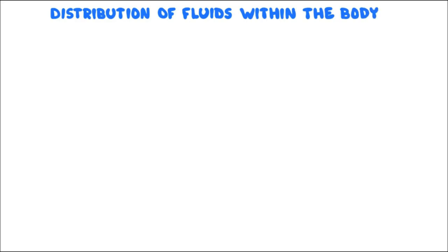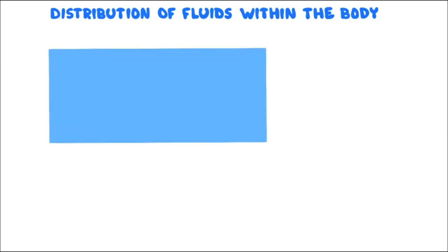In this video we're going to talk about body fluid and its distribution between extracellular vs intracellular compartments. The total amount of fluid or water in a human body is called total body water. The actual total volume of body water depends on a variety of factors including size, sex, and body mass index.